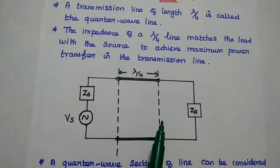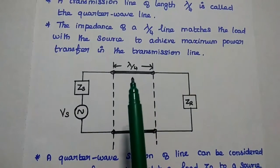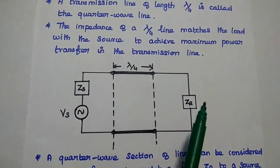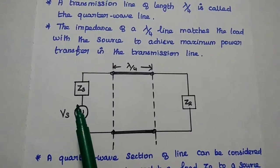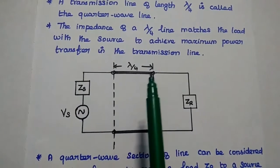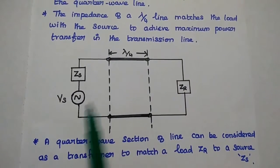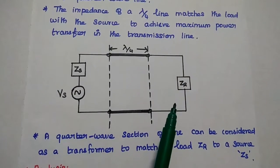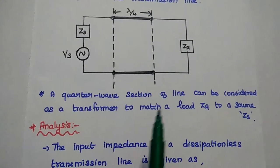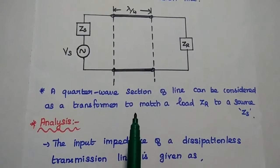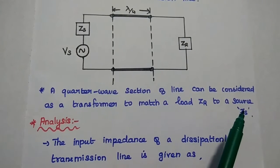This is the diagrammatic representation. Here the quarter wave line can be used to match the load impedance with the source impedance. We can connect this lambda by 4 transmission line section in between the source and load. A quarter wave section of line can be considered as a transformer to match the load impedance with the source impedance.